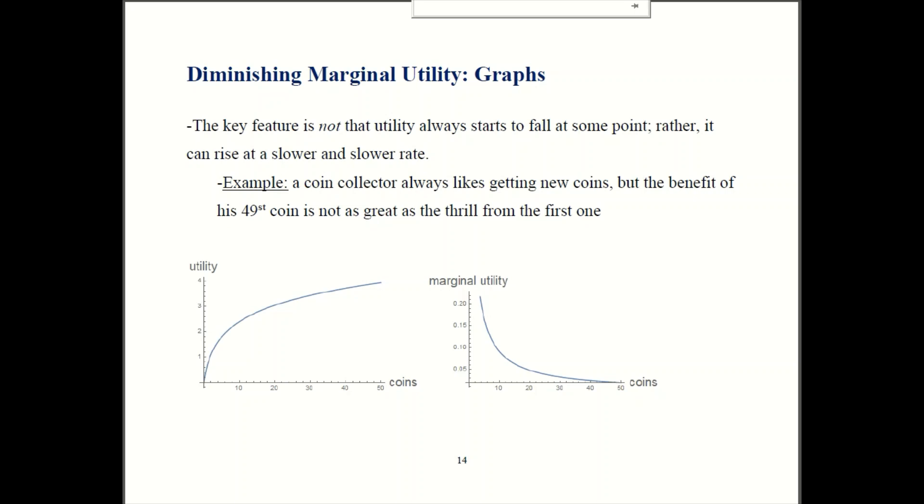Hello students. Welcome back to another episode of Principles of Micro. So right now we're in chapter 16 talking about consumer choice. And we just went over this hugely important concept of diminishing marginal utility. Go back and look at that last episode if you're a little bit unsure about this or need some review.